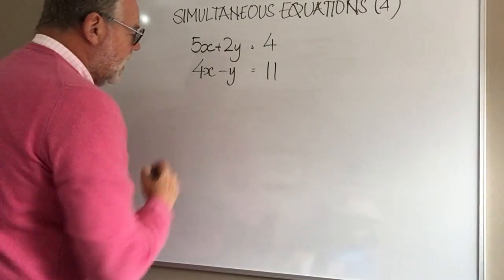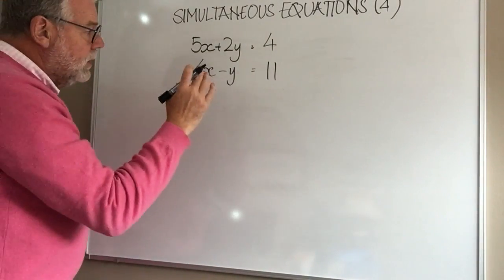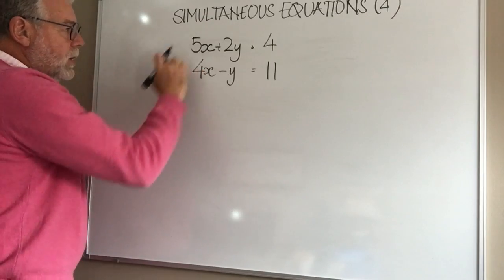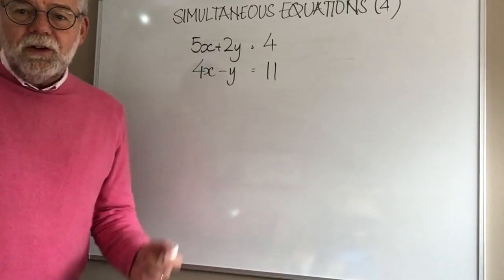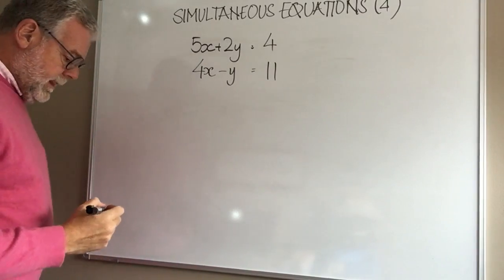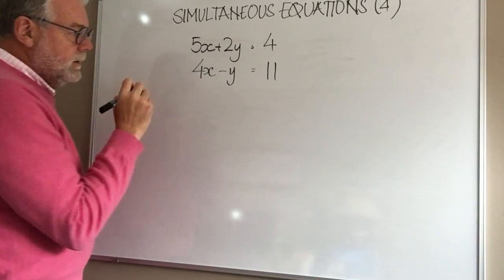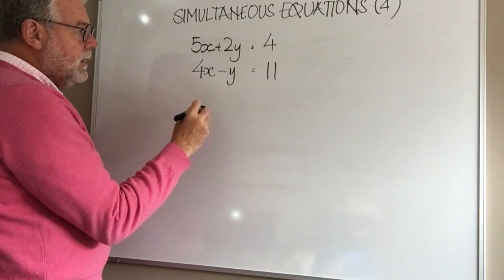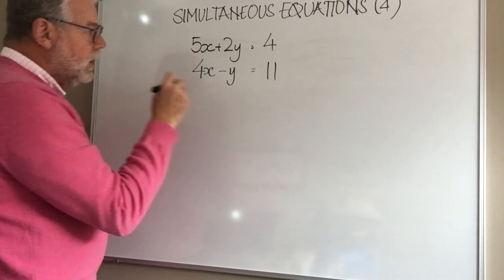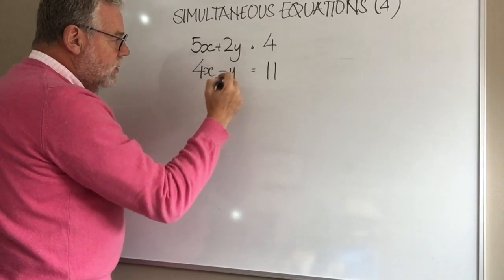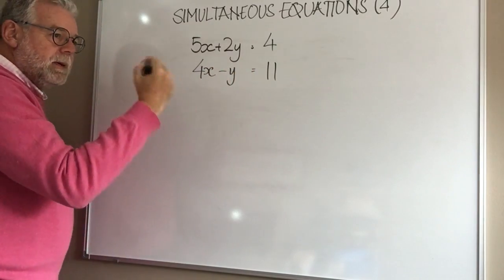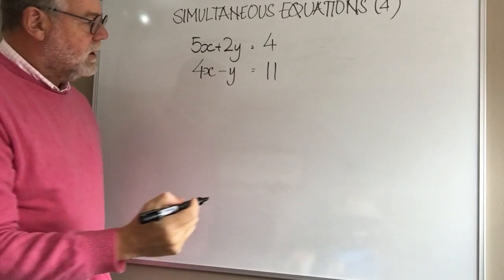This time we've got another challenge, because to get rid of x or y we can't subtract, we can't add them together, so we've got to think of another strategy now. My tip is to think about what could we make a value of x and y that would help us to remove it as part of our solving a simultaneous equation.